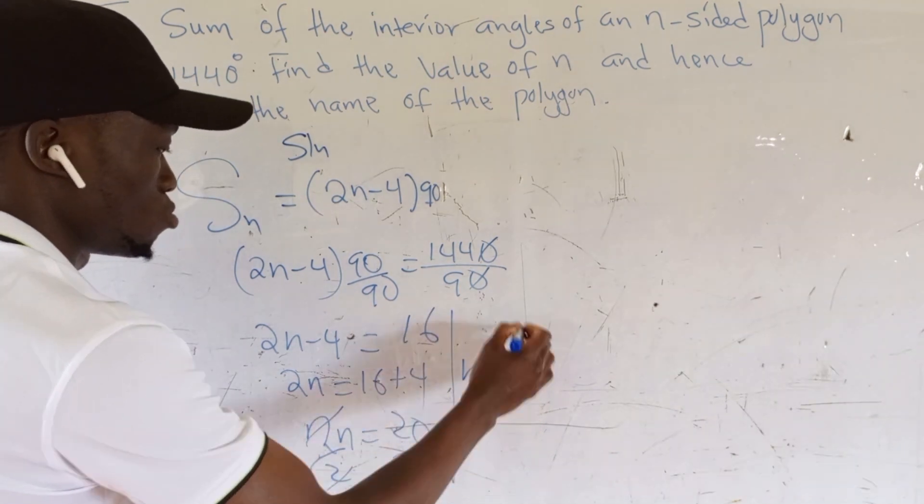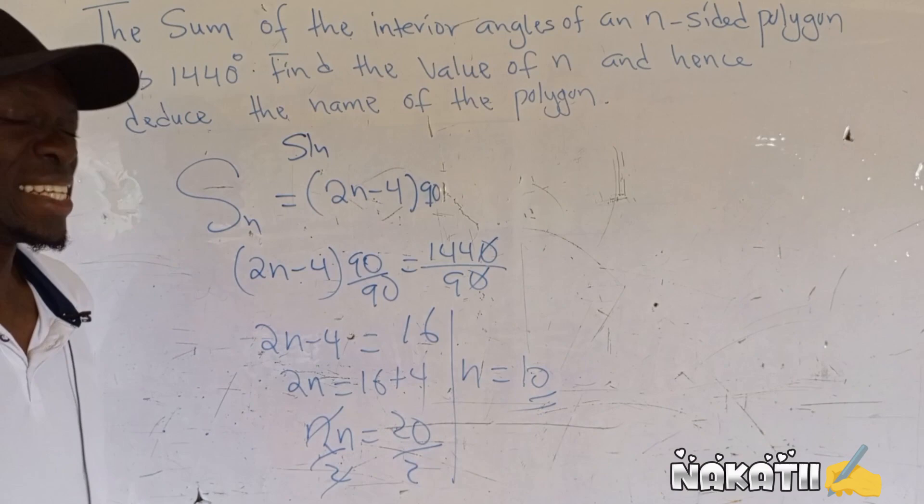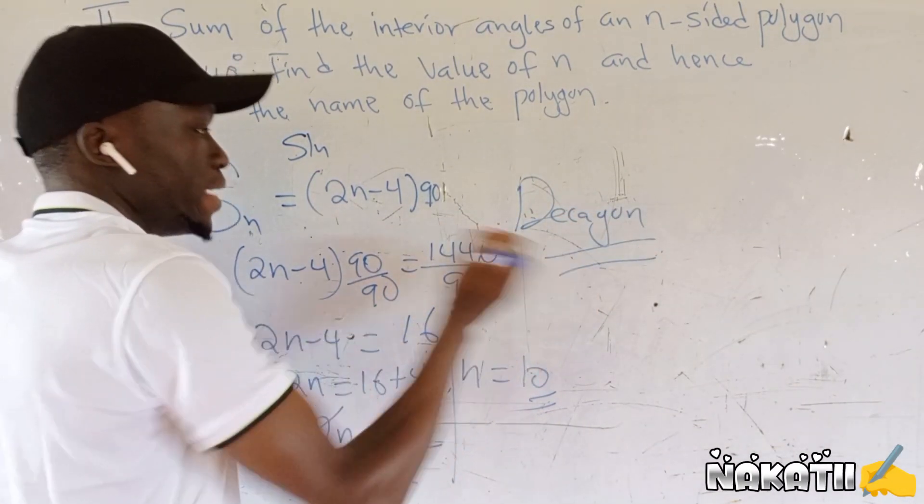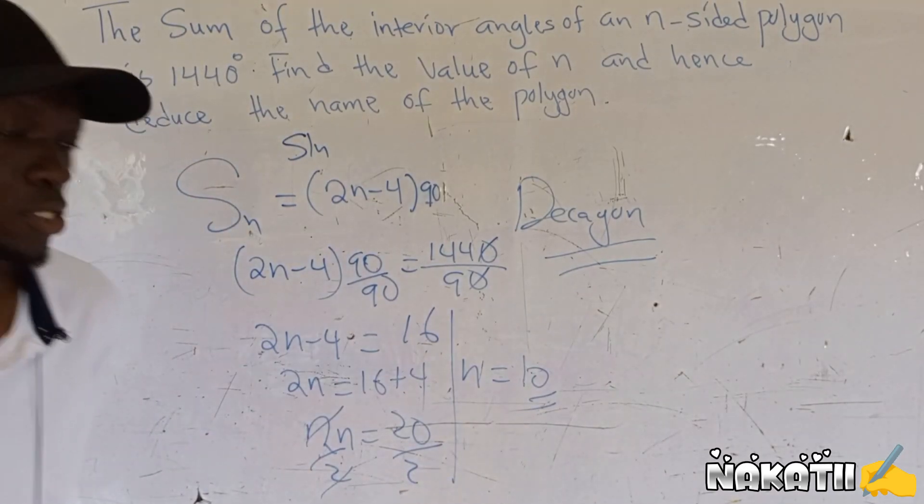So it is a 10-sided polygon and the name given to a 10-sided polygon we call them decagon. Thank you for watching.